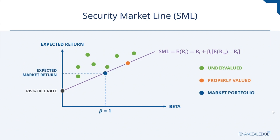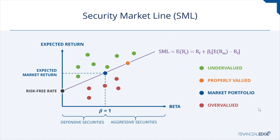So in theory, an undervalued security should be purchased. Conversely, if the security plots below the SML, it is considered overvalued in price because the expected return does not overcome the inherent risk. Securities with betas less than one are often called defensive securities, and those with betas greater than one are often called aggressive securities.